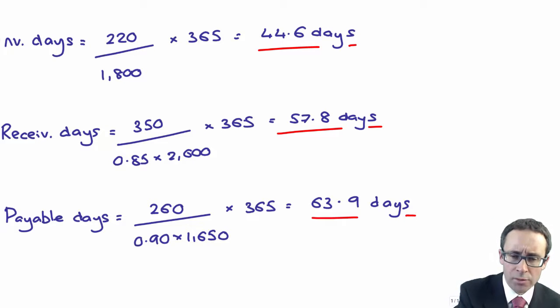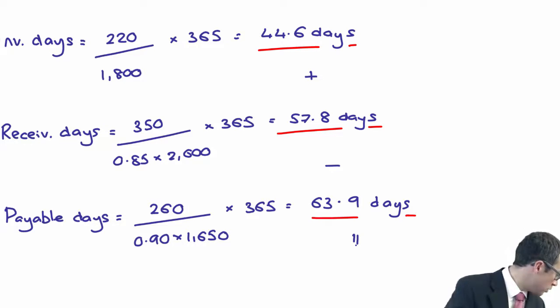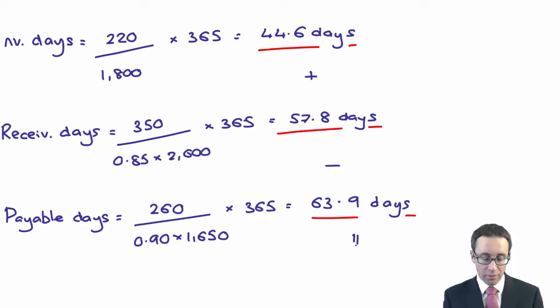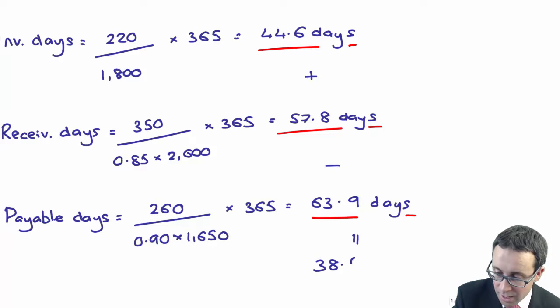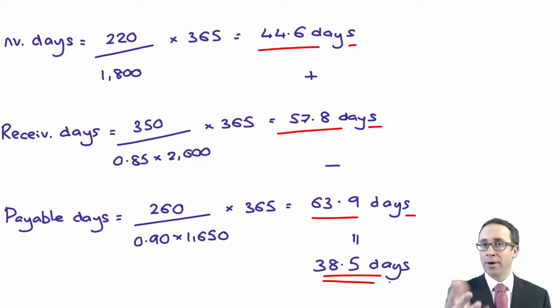If you wanted to work out your working capital cycle - how long does it take to get the cash in, or how long are you without cash within a business - we'll touch upon this in a moment. 44.6 plus 57.8 less 63.9 gives me 38.5 days. That's your working capital cycle or your cash operating cycle, the number of days that the business is without cash. But I will elaborate on that afterwards.